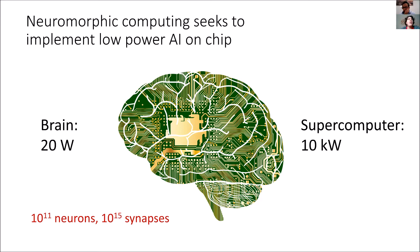It really makes sense to try to take inspiration from the organization of the brain to reduce the power of AI chips, because the brain actually consumes orders of magnitude less energy than the supercomputer. This is due to the fact that in the brain, memory and computing are completely entangled. So we are seeking to put together a lot of artificial neurons and synapses.